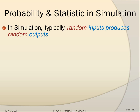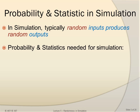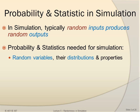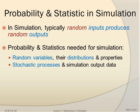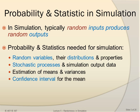Now let's review probability and statistics in simulation. In simulation we typically work with random inputs, and the random input produces random output. We need to use probability and statistics to make sense of it. We will discuss random variables, their distributions and properties, stochastic processes and simulation output data, and also estimation of mean and variance. We also talk about confidence intervals.